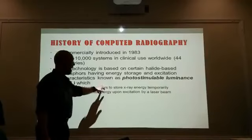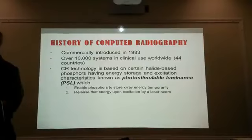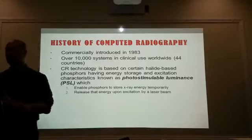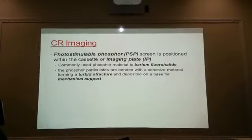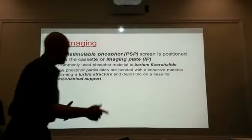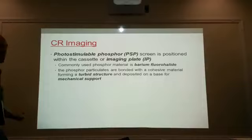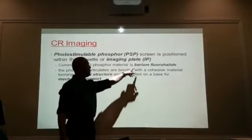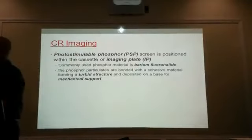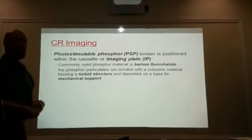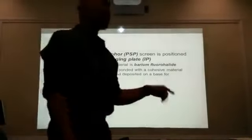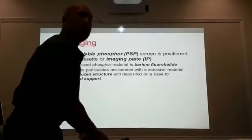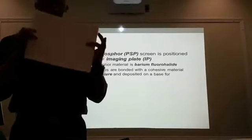These crystals have characteristics known as PSL, which allows the crystals to store the x-ray energy until they're scanned at a later time. The PSP screen is positioned within the cassette or the imaging plate. The commonly used phosphor is known as barium fluorohalide. Instead of your silver halide crystals in your film's emulsion, now we have barium fluorohalide within the turbid structure of the PSP screen. Turbid just means muddy — the emulsion is gelatin-like, the PSP is mud-like.